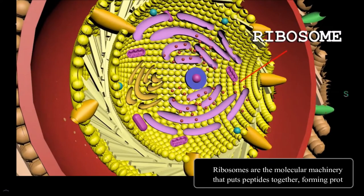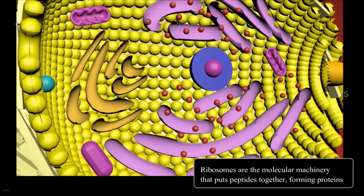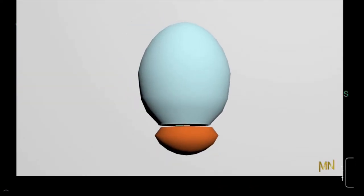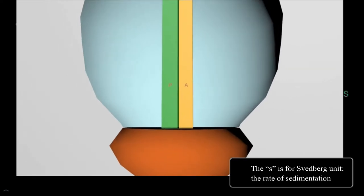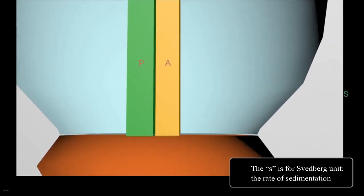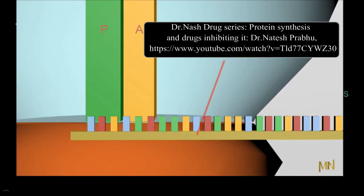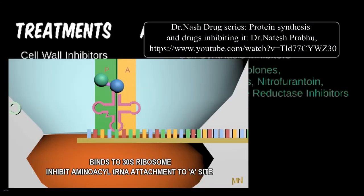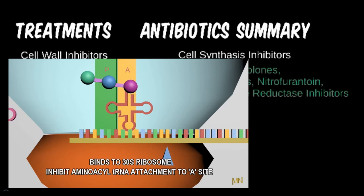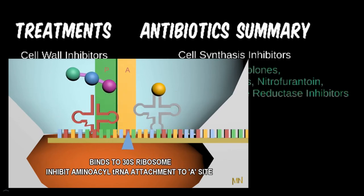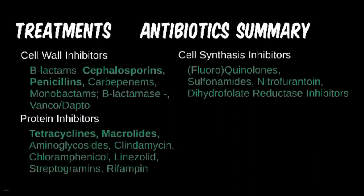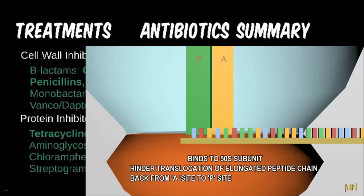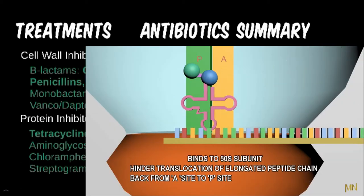The protein inhibitors are targeted at the ribosomes and enzymes within organism cells. Specifically, the 30S and 50S ribosomal subunits are major targets. The subunit size is correlated to the number of nucleotides of RNA. Tetracyclins and aminoglycosides target the 30S subunit. Macrolides, streptogrammins, and chloramphenicol target the 50S subunit. Linezolid is a bit different in that it attacks both the 50S and 70S subunits.